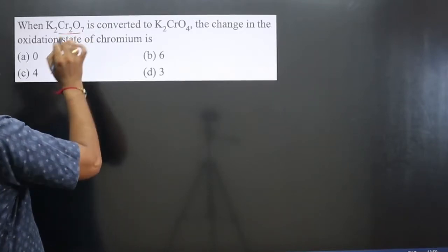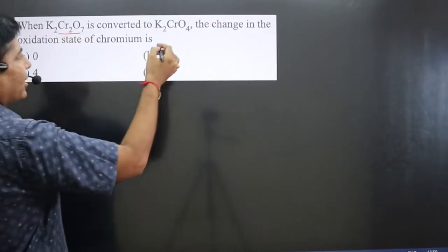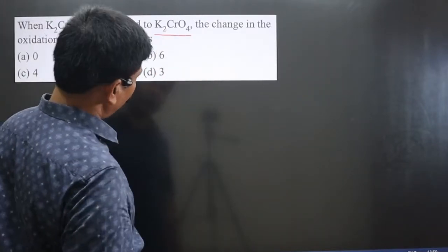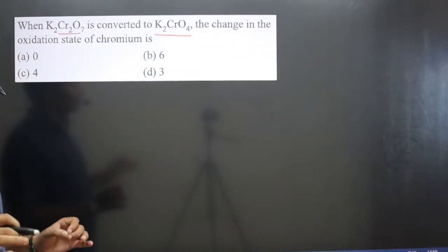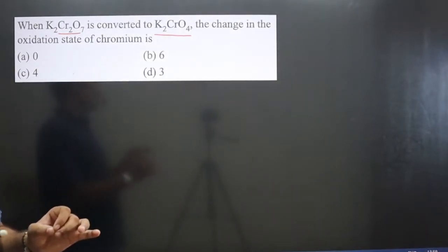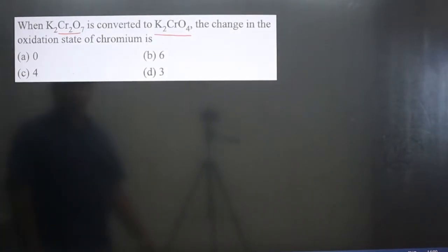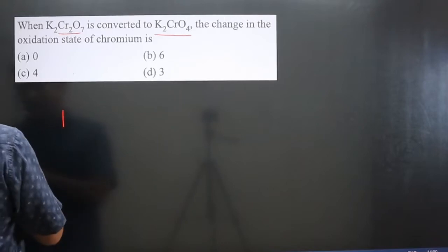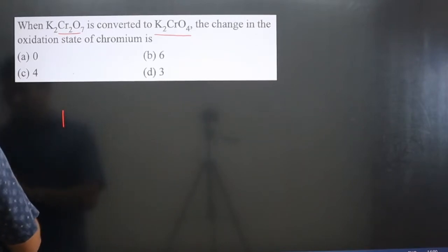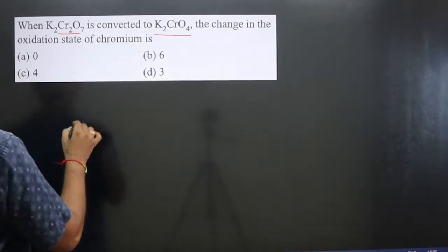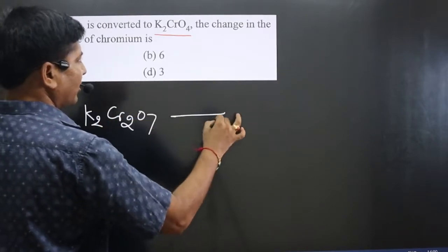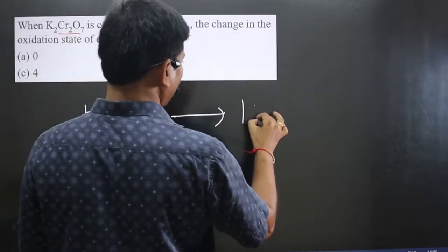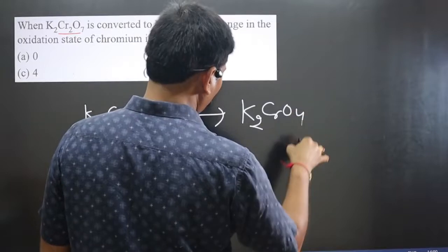The question asks: when K₂Cr₂O₇ is converted into K₂CrO₄, what is the change in oxidation state of chromium? Change in oxidation state means the difference in oxidation number of the chromium element. We can write this chemical reaction — K₂Cr₂O₇ converting into K₂CrO₄.